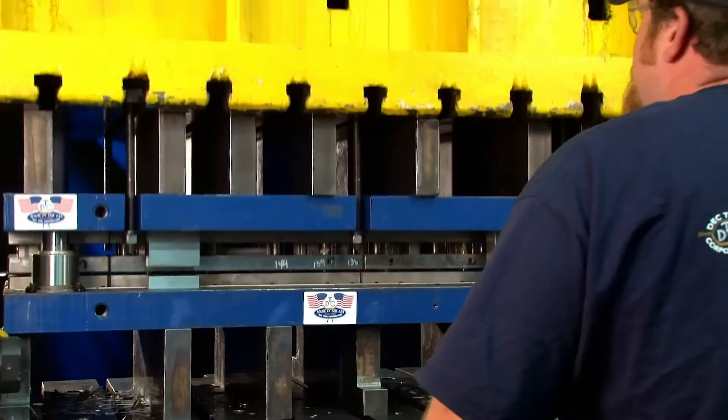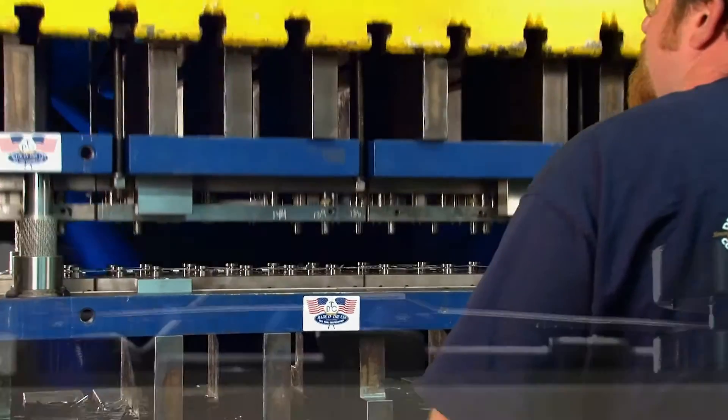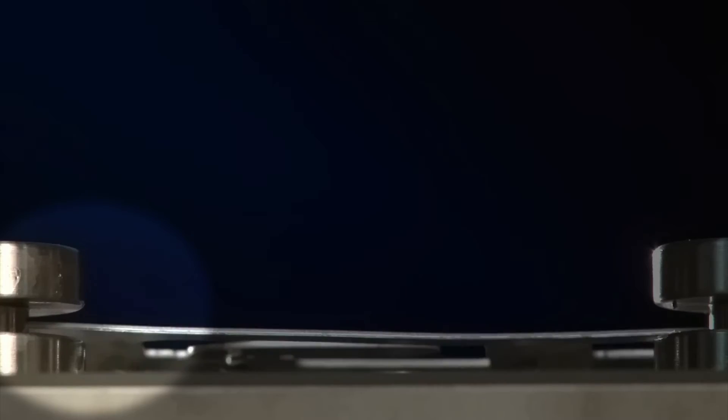During the stamping operation, slugs expand into these precision grooves, which prevents them from pulling back up to the top of the die block and onto the die surface where they can cause damage to the strip, the final part, even to the die itself.